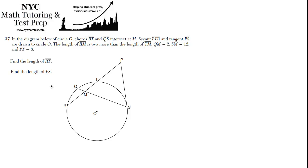37. In the diagram of circle O, chords RT and QS intersect at M. Secant PTR—so secant's just a line that comes from outside the circle and it crosses it at two points. So that's the secant.